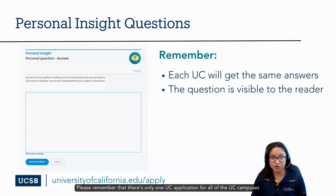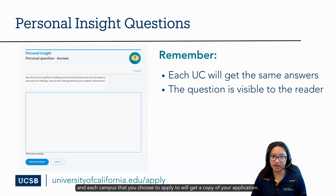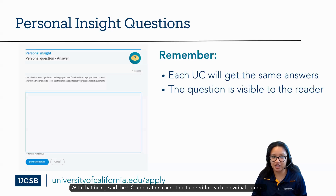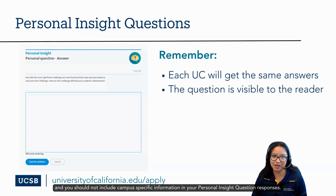Please remember that there is only one UC Application for all of the UC campuses, and each campus you apply to will get a copy of your application. The UC Application cannot be tailored for each individual campus, and you should not include campus-specific information in your Personal Insight Question responses.